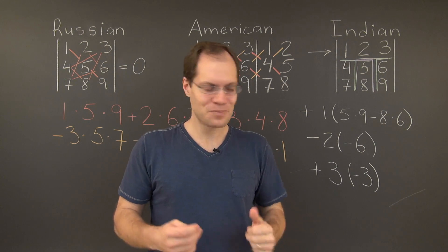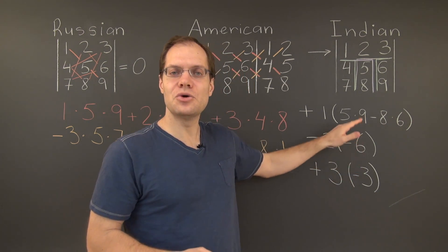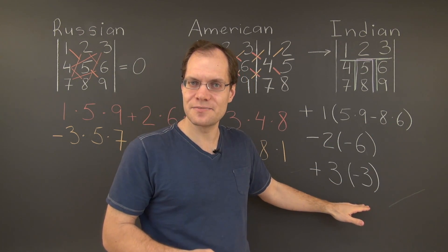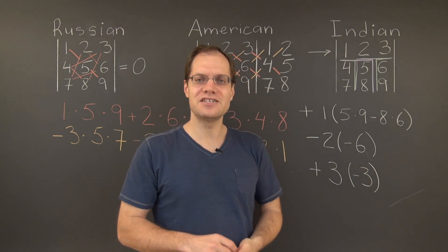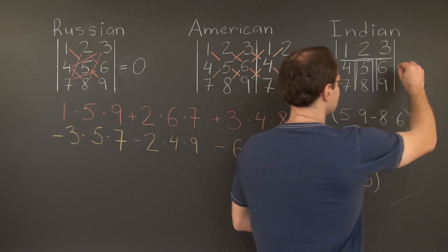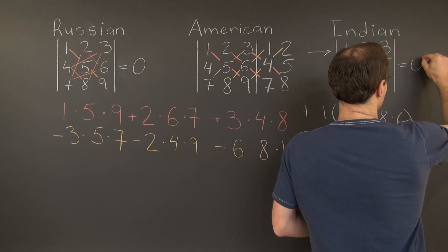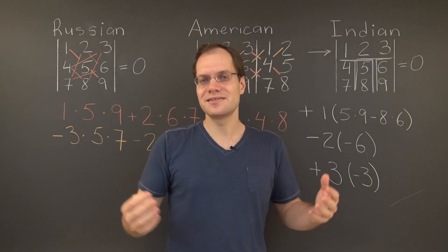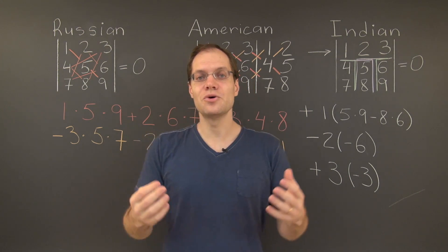This was a lot of talking, but once you get the hang of this, you will see that this actually goes pretty fast. And it's the least amount of writing and computation compared to the other two approaches. And so we have zero. And this is the Indian approach. So in the next video, we will choose a different matrix and illustrate each one of these three approaches.